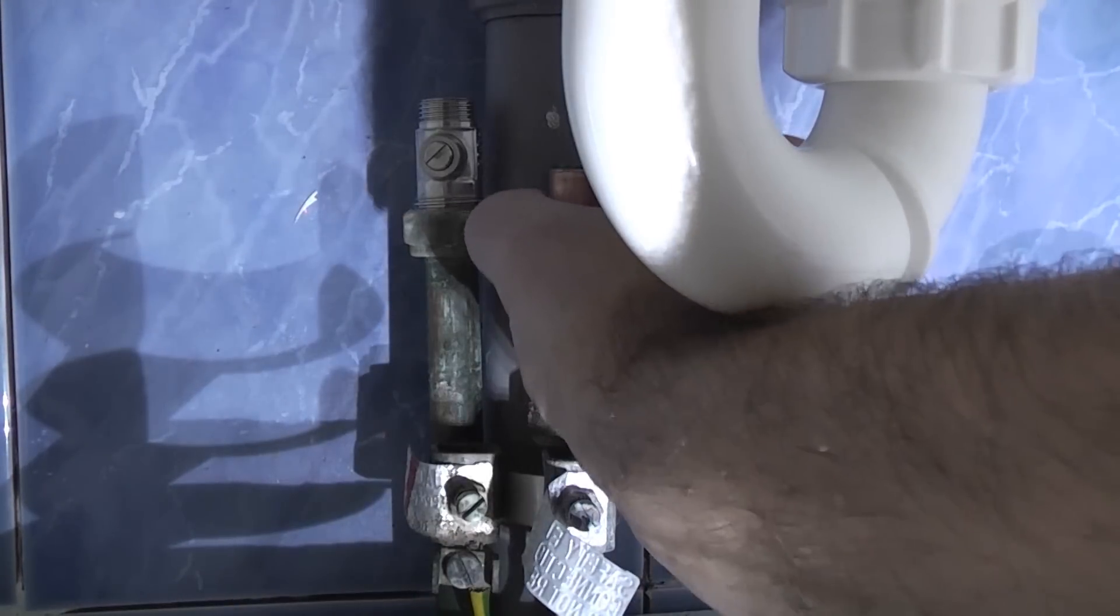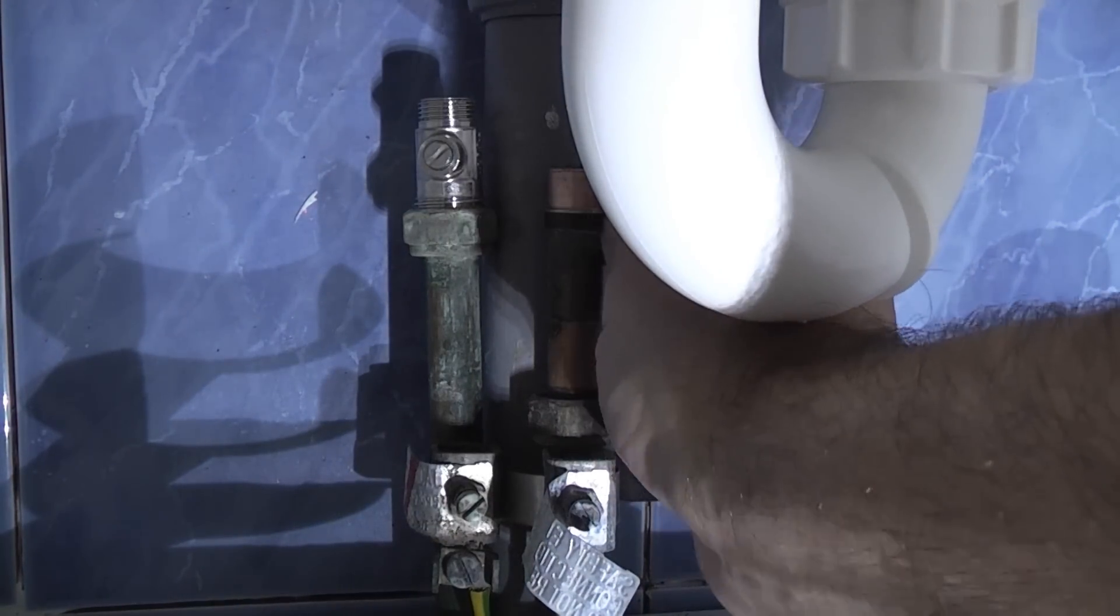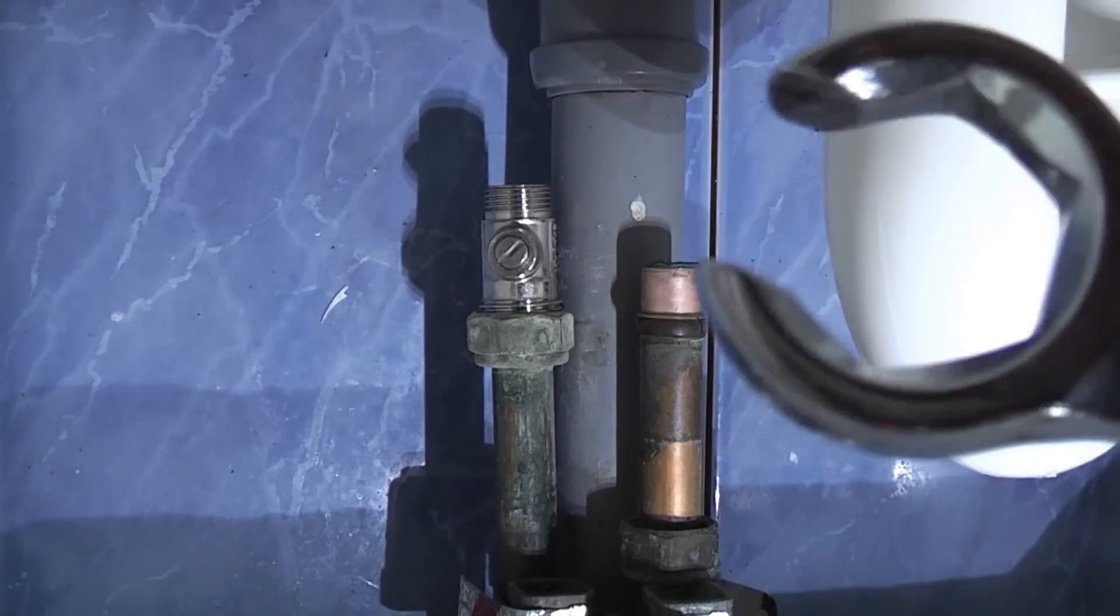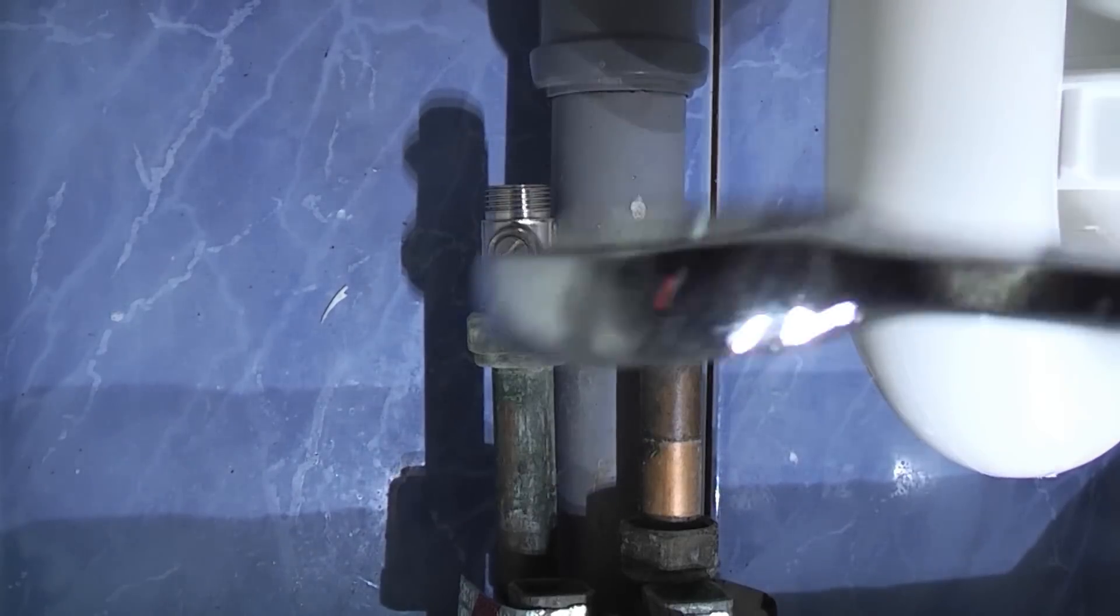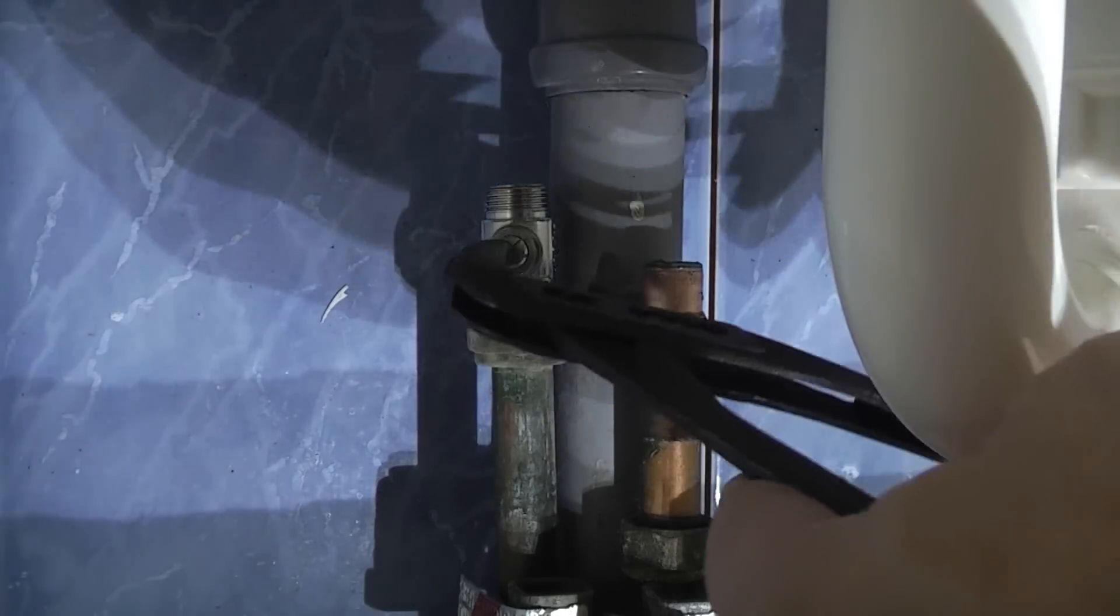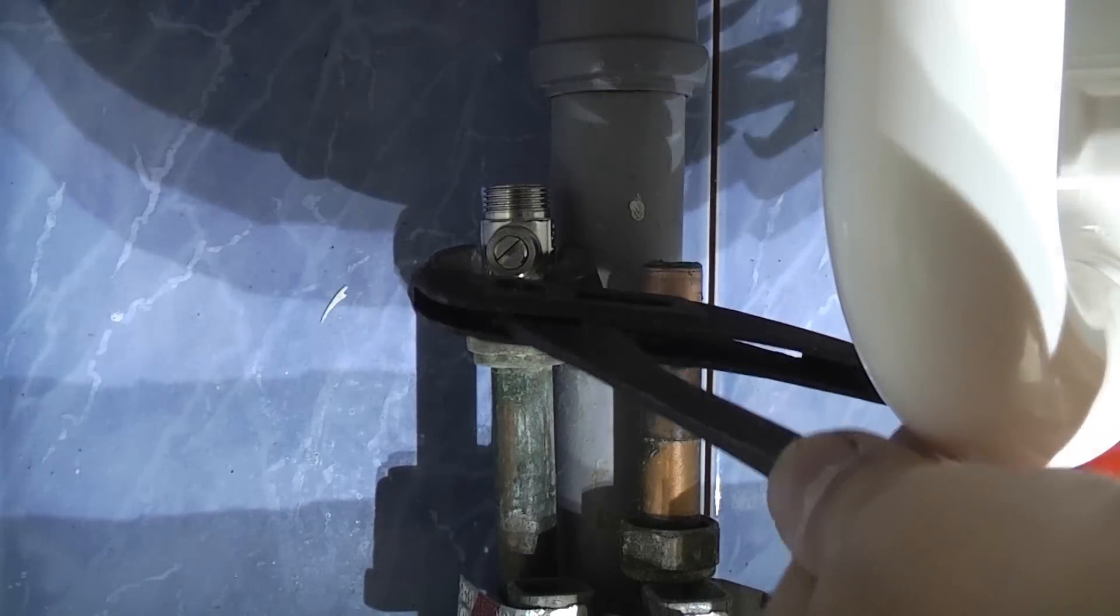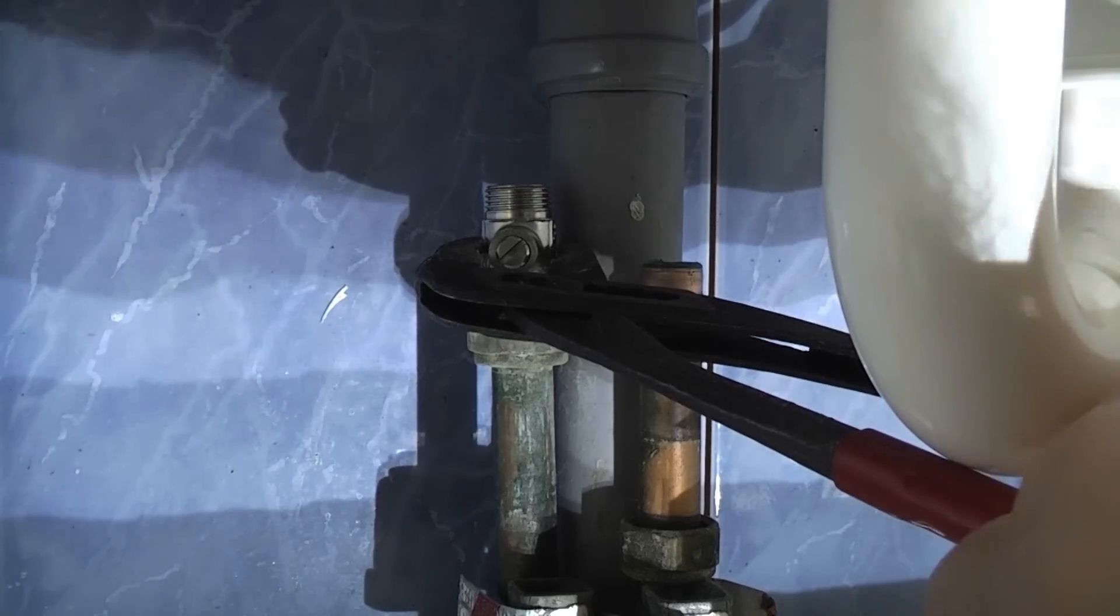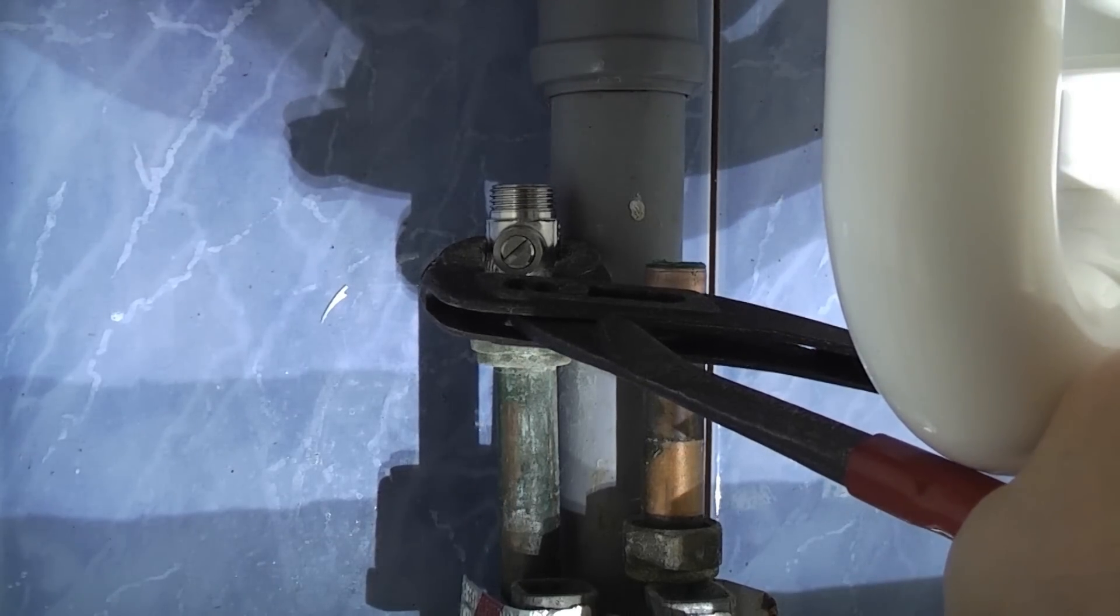Now this time we can't actually use the special spanner which is actually a 24mm by the way. We can't get that in there because we've not got enough room to turn it. So we need the isolation valve so that it's facing this way. So I'm going to use the water pump pliers to grip that. Then I'm going to tighten the compression nut using an adjustable spanner.